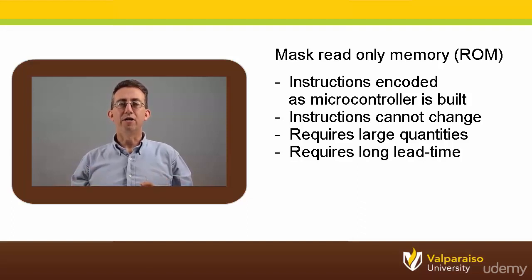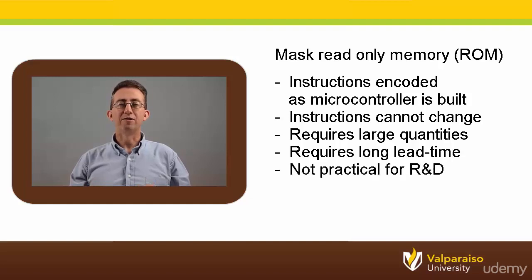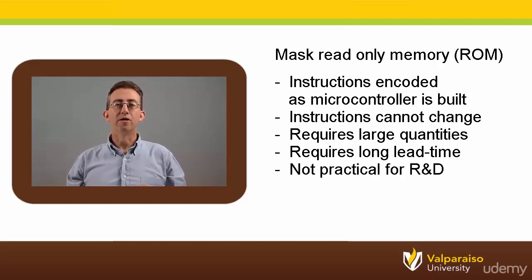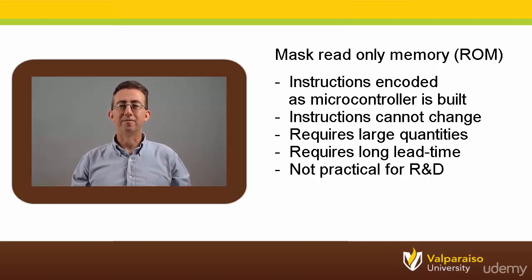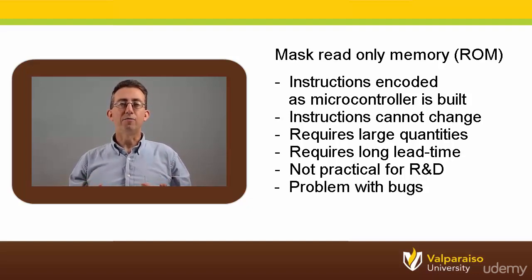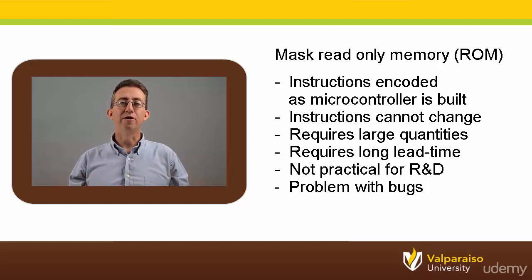The turnaround time between completing a program and receiving the fabricated mask ROM microcontroller can be several weeks or months. Also, mask ROM is impractical for research and development work since designers need to modify the contents of a memory often as they redefine a design. Finally, if a product is shipped with a faulty masked ROM — for example there was a hidden software bug — the only way to fix it is to recall the entire product and physically replace every microcontroller in every unit that was shipped.